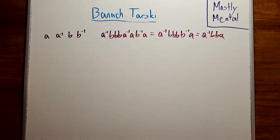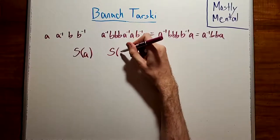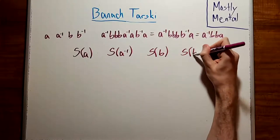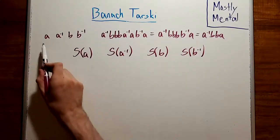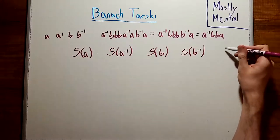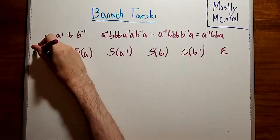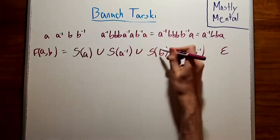So, what words can we make? Well, once all the cancellation happens, some of our words will start with A. We'll call this set of words S(A). And similarly, some will start with A inverse, and some will start with B, and some will start with B inverse. And for completeness, there's one more word, the word with no letters in it, which is what you get when you cancel A and A inverse. We'll call this the empty string and write it with an epsilon. So, the free group on A and B will be the union of all of these sets.